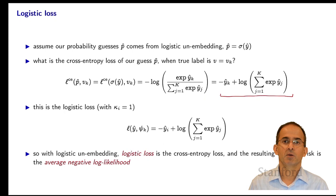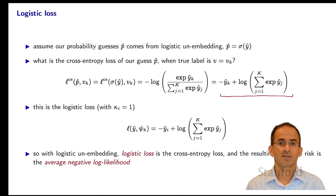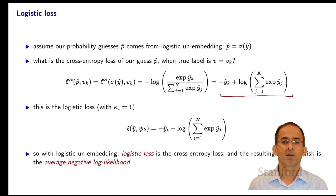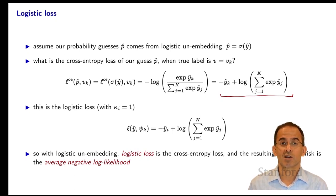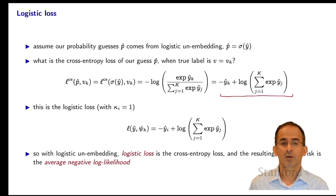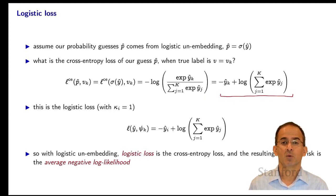This is an expression we've seen before — it's the logistic loss when kappa_i is 1. So the logistic loss we used for deterministic classification is exactly the same as the cross-entropy loss when you use the logistic unembedding. And so when we look at the empirical risk for logistic regression in the deterministic case, that's exactly the average negative log likelihood. We can use the y-hats from logistic regression, but instead of unembedding using the nearest-neighbor map, we unembed using the logistic unembedding: p-hat is sigma of y-hat. That way, instead of getting a deterministic classifier, we get a probabilistic classifier.